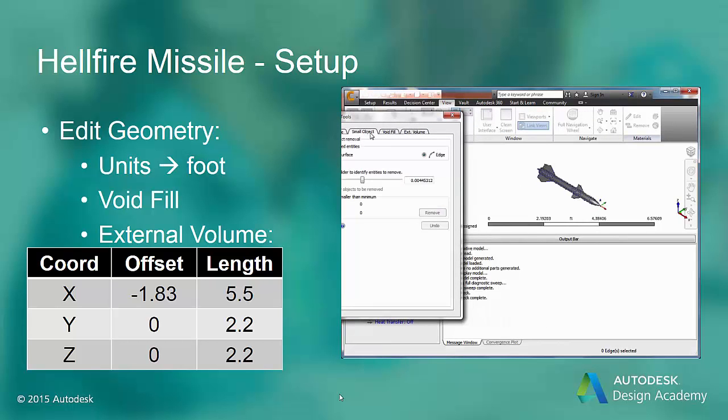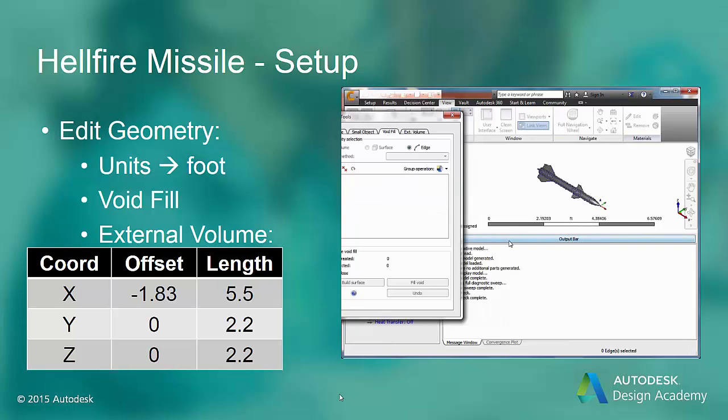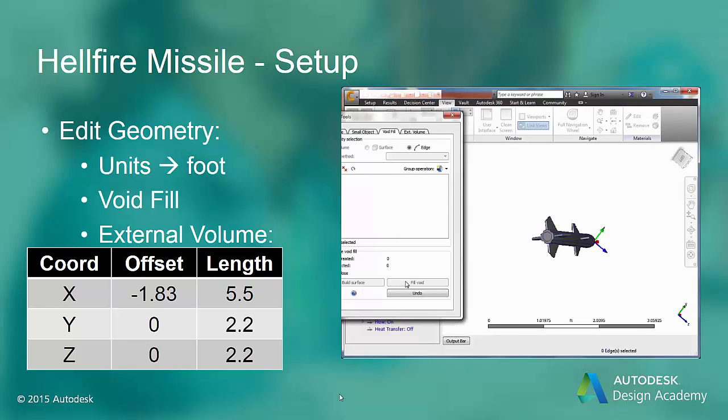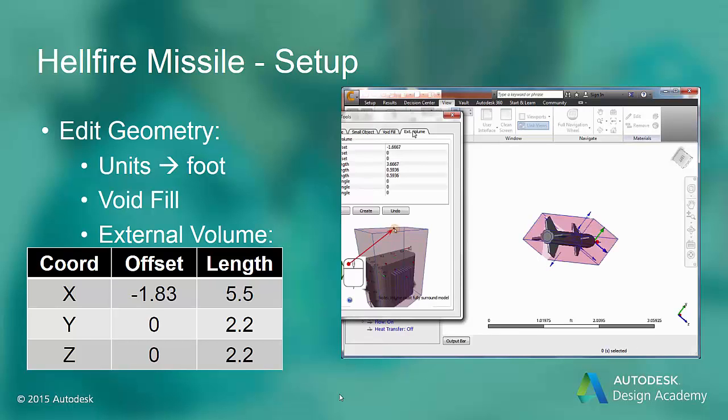And then we're going to edit the geometry. Note there are no edges to merge and no small objects. But we have a void in the center of the missile where some of the inner workings were not built. So first we're going to cap that void and build a surface and fill the void to create a new part. The other thing we need to do is to create the air volume around the missile. We can grab the arrows to extend the air box to the desired size or we can assign the values that are shown in the table.